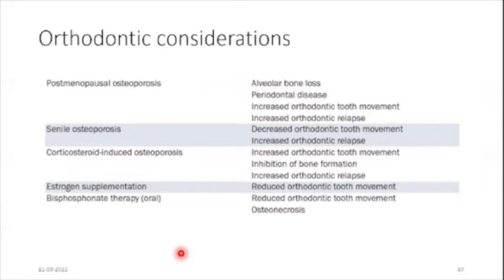The main implications on orthodontic treatment are due to bisphosphonate use. Bisphosphonates inhibit the resorption of trabecular bone by osteoclasts and hence preserve bone density. Although their medical benefits have been proven, there are an increasing number of side effects that can affect orthodontic treatment, including delayed tooth eruption, inhibited tooth movement, impaired bone healing, and bisphosphonate-induced osteonecrosis of the jaw. In postmenopausal osteoporosis, there can be alveolar bone loss, periodontal disease, increased orthodontic tooth movement, and increased orthodontic relapse.